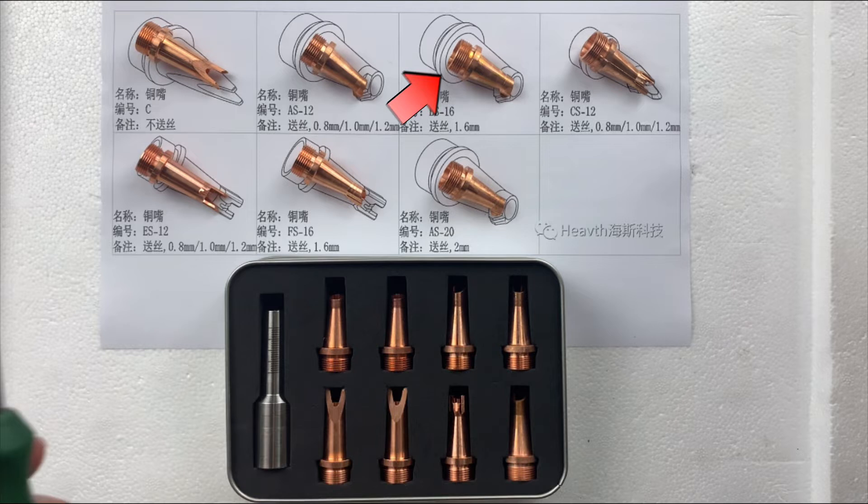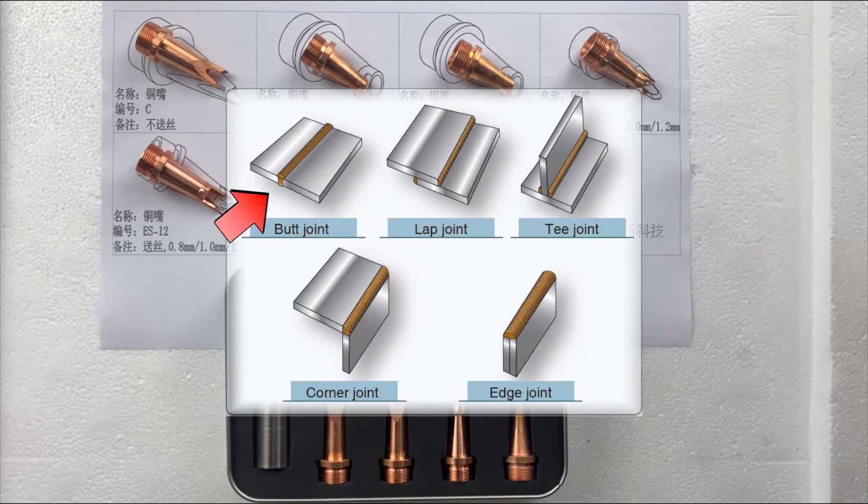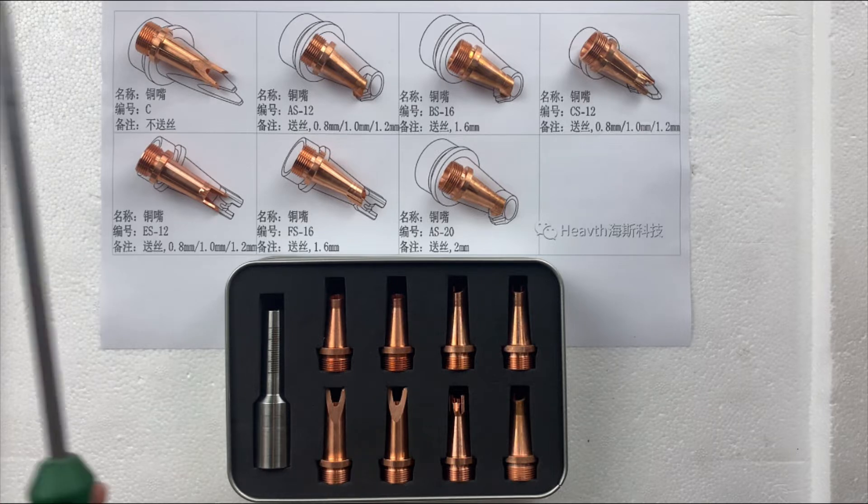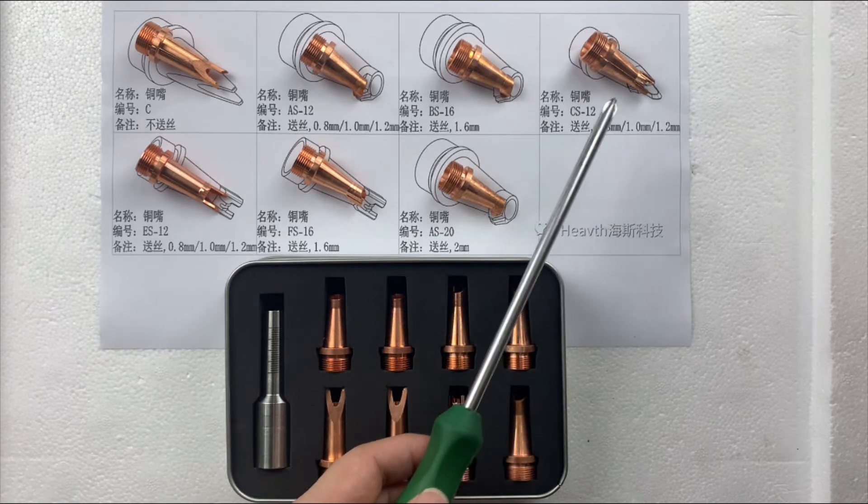Laser BS16 is for butt joint, corner joint, and lap joint. 1.6 mm well-fitting welding.